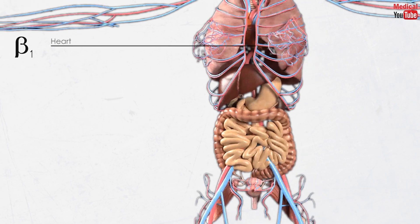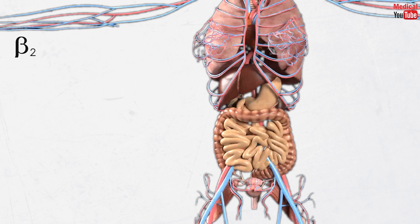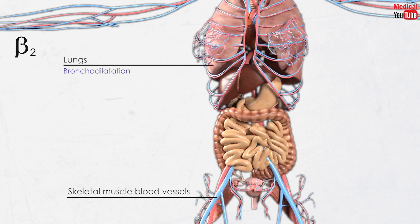Beta-1 is located in the heart; when activated, it increases the heart rate, known as tachycardia or positive chronotropic effect, and increases the force of contraction, known as positive inotropic effect. Beta-1 is also located in the juxtaglomerular apparatus of the kidneys, where it releases renin, increasing blood pressure.